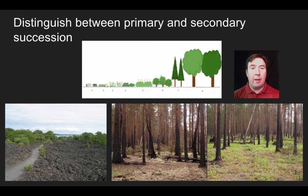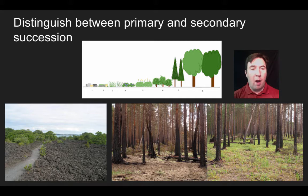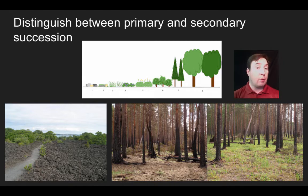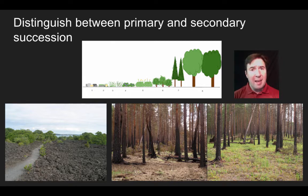Following that, you had some organisms that could come in and dig deeper roots, and further turned over the rock and created a deeper soil structure. This gave rise eventually to some shrubs, and then to some small trees, and then ultimately larger trees. That first step of changing the initial environment, we call that primary succession.